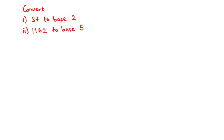Now we are going to learn how to convert from base 10 to any other base. To do this, we use the method of successive division — we divide the given decimal by the appropriate base repeatedly until we have nothing left to divide. We make a table containing the base value, the decimal value, and the remainder.